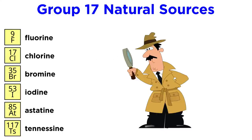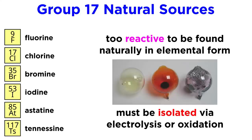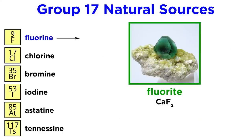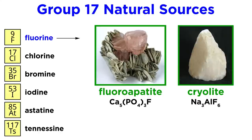Where can these elements be found? They are actually too reactive to be found naturally in elemental form, but they can be found in a variety of compounds and separated by electrolysis or oxidation. Fluorine is present in ores like fluorite, which is widespread, with the largest deposits located in South Africa, as well as fluoroapatite and cryolite, the latter of which is found mainly in the United States, Canada, and Russia.